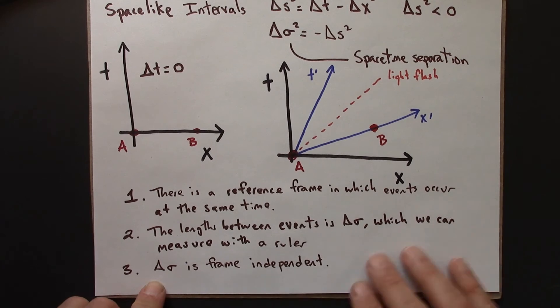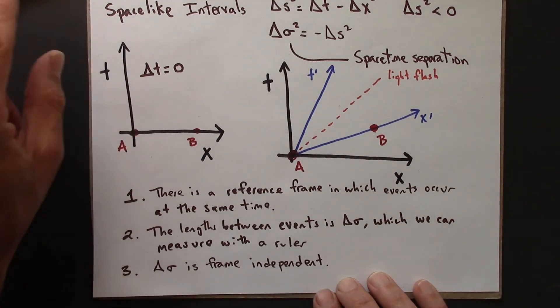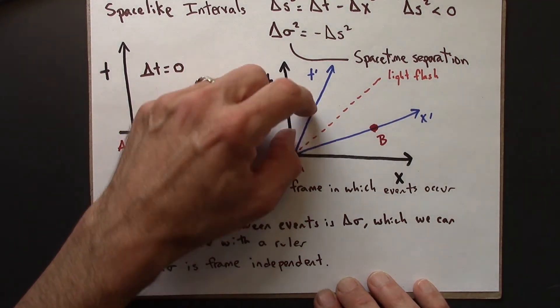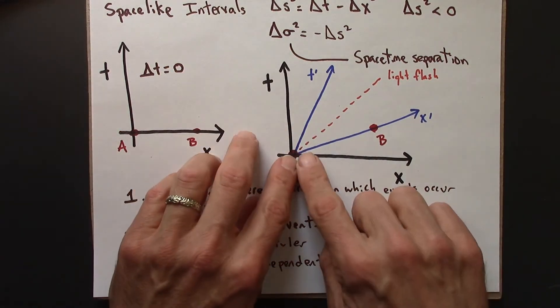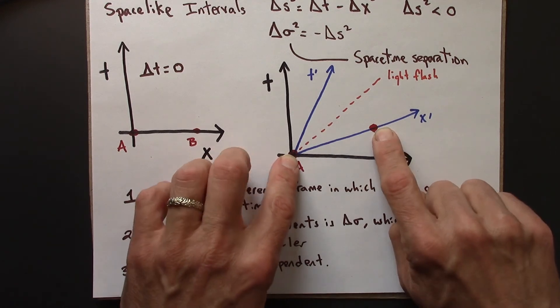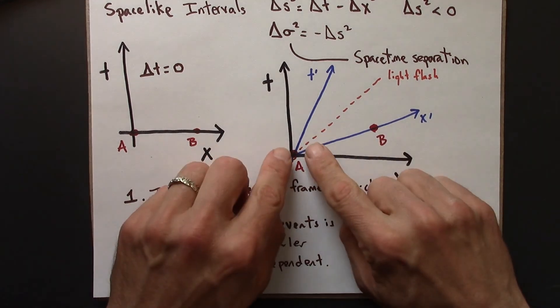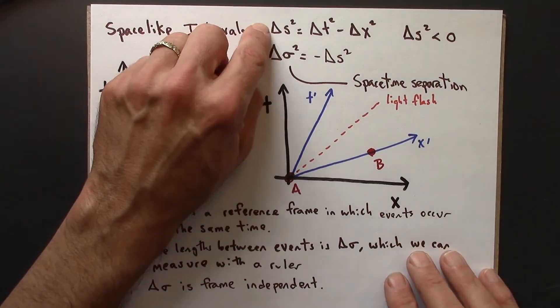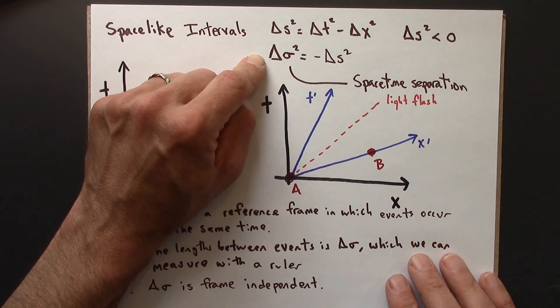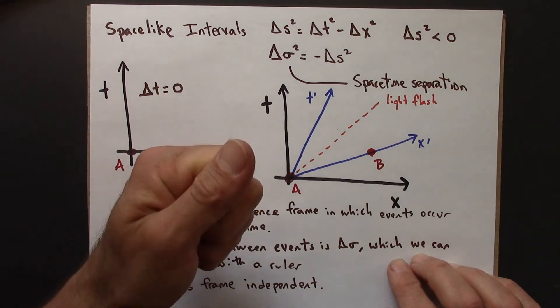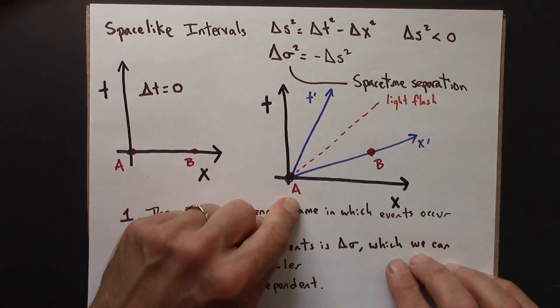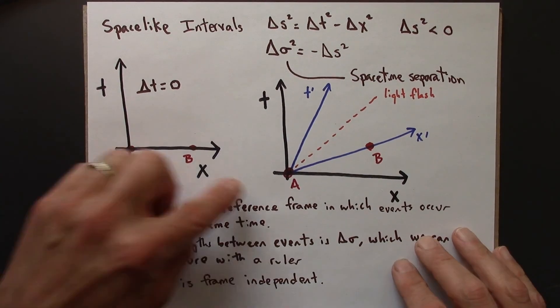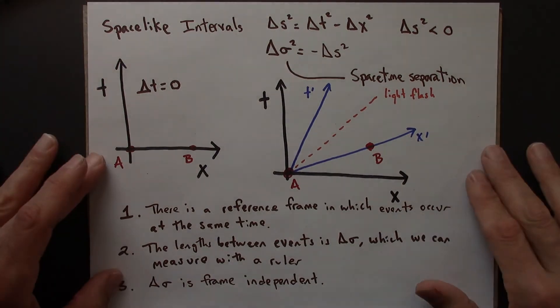And that's not an immediately obvious statement because when we defined the spacetime interval, we defined it in terms of a single clock present at two events. That argument doesn't work here. Instead, we can apply the Lorentz transformations to the spacetime coordinates for A and B, calculate the delta s squared or delta sigma squared in one frame, use the Lorentz transformations to translate them into another frame, calculate this again, and you'll get the same value. So these are the properties of spacelike intervals.